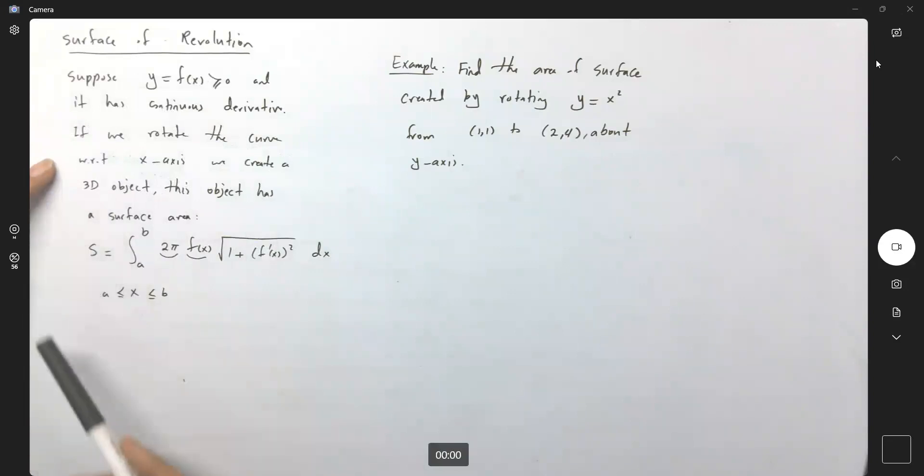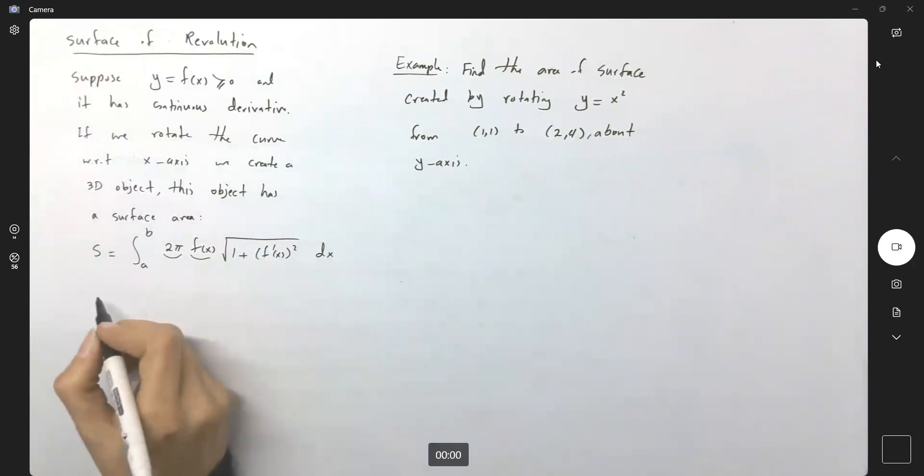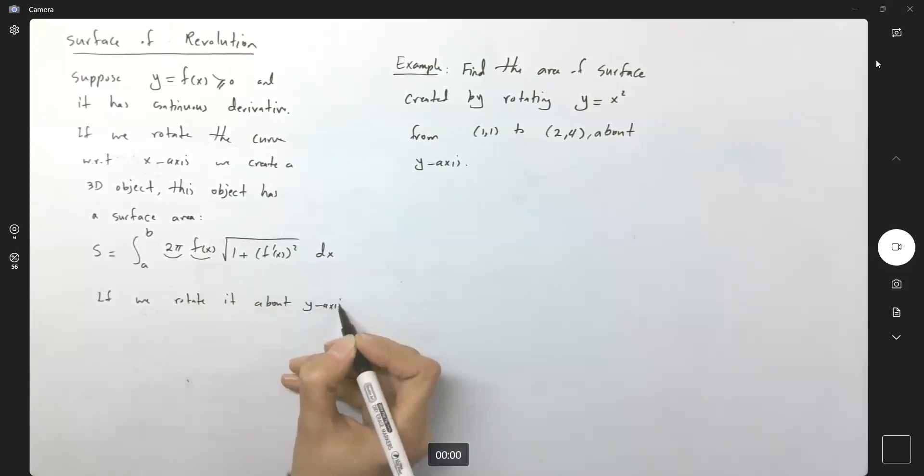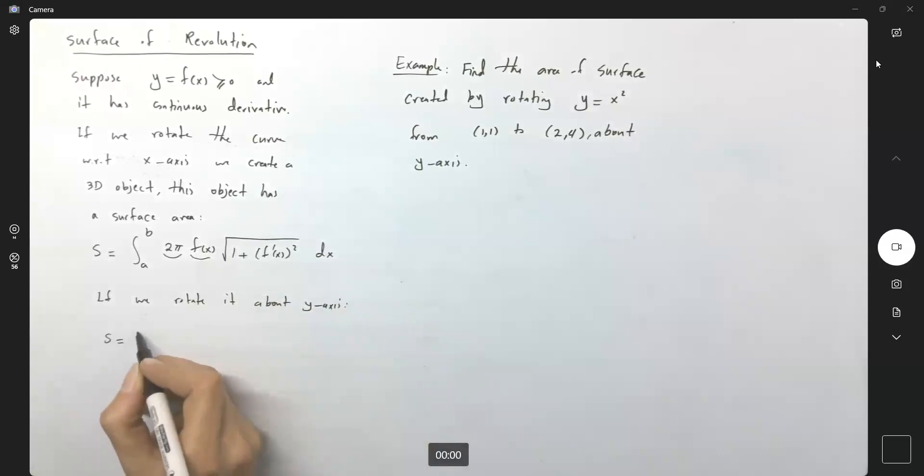Now I expect you to ask, what if we rotate this about y-axis? If we rotate it about y-axis, then the area of the surface is going to be the integral. Now you have 2 pi times x square root of 1 plus f prime of x to the second power dx.